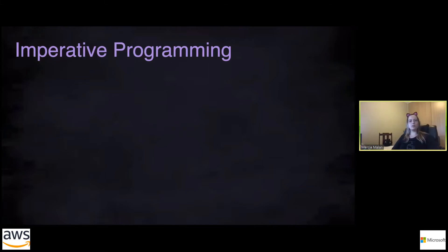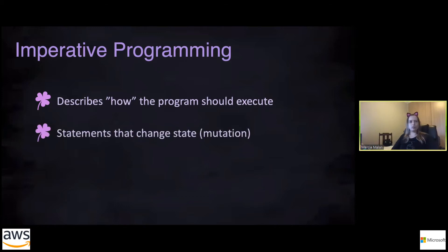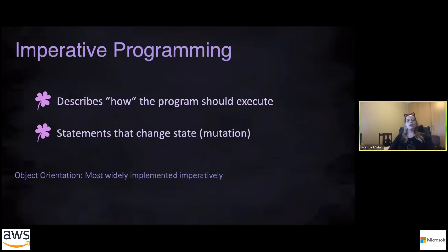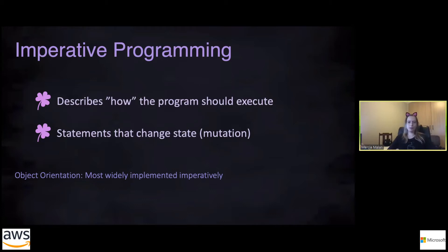What is imperative programming? That is where you describe how the program should execute. You have statements that change the state, so there's a lot of mutation. Object orientation is most widely implemented imperatively, even though it isn't necessarily an imperative language. Examples of non-imperative object orientation languages include Smalltalk, but in my experience I haven't worked in environments where people don't do it imperatively.